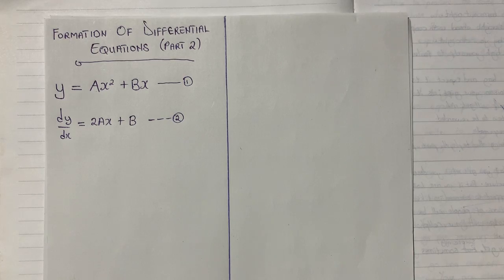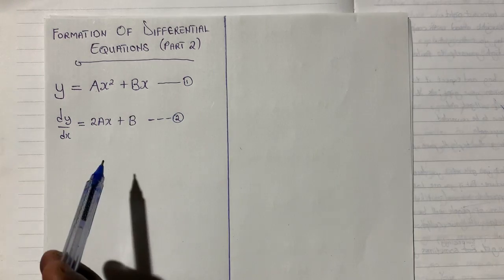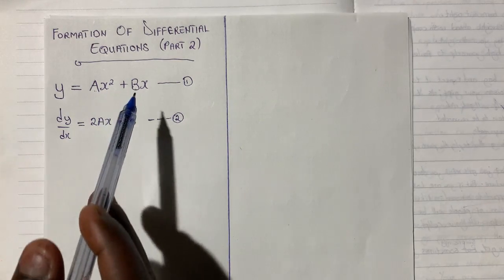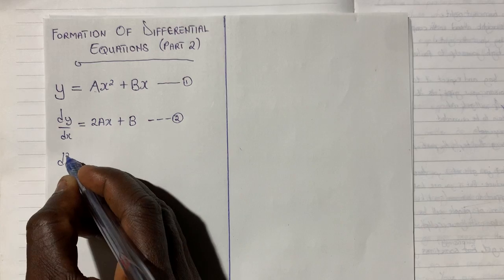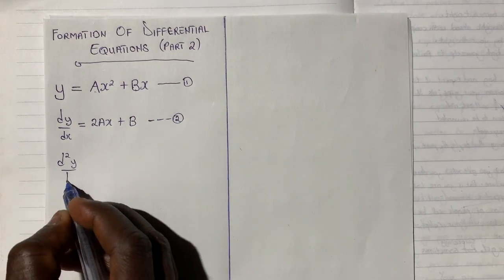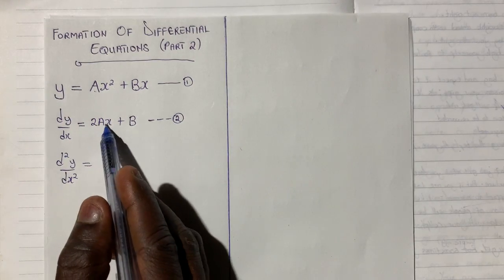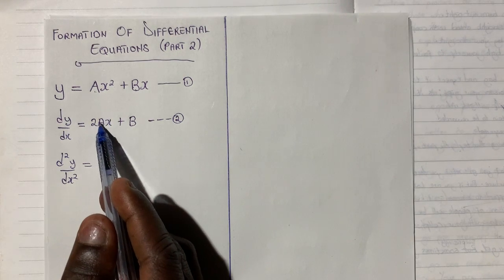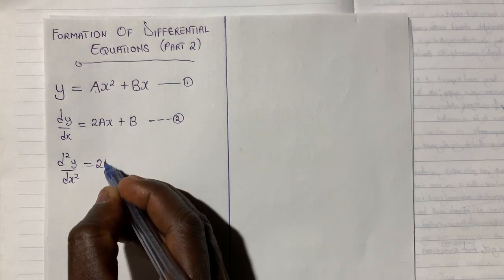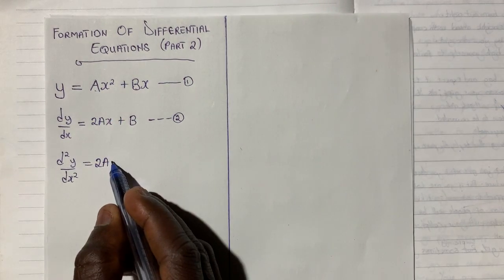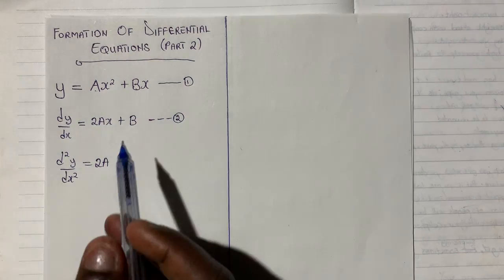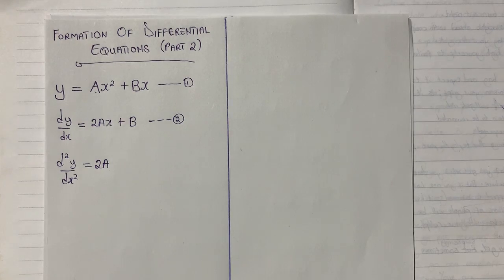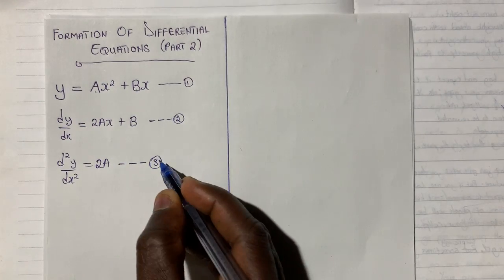I will differentiate a second time because there are two arbitrary constants. The second derivative, d²y/dx², gives: differentiating 2ax gives 2a (since the power 1 times 2a gives 2a, and x to the power 0 equals 1). The derivative of the constant b is always 0, so b disappears. This is Equation 3: d²y/dx² = 2a.